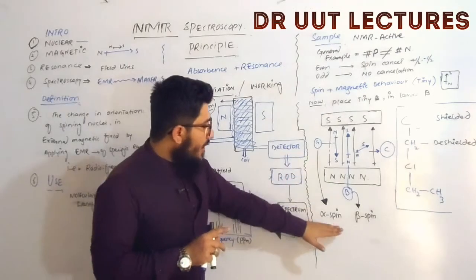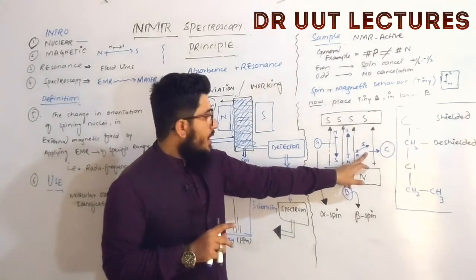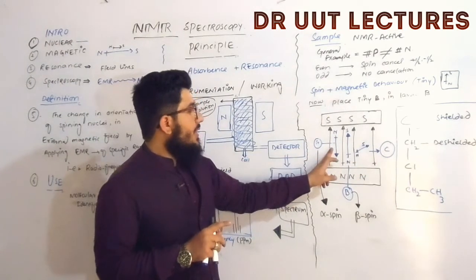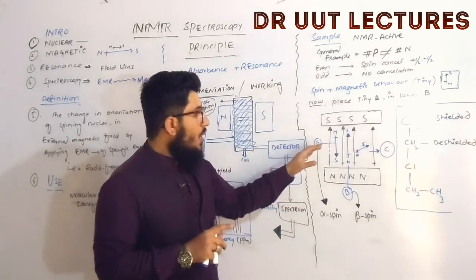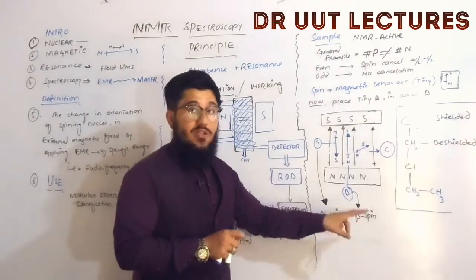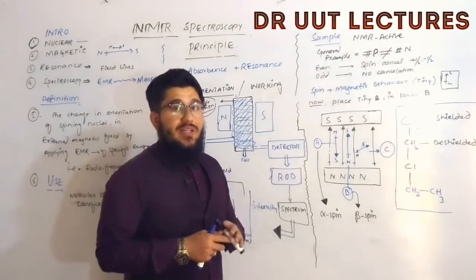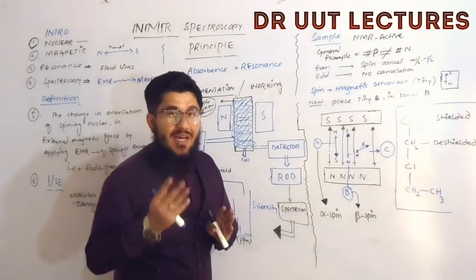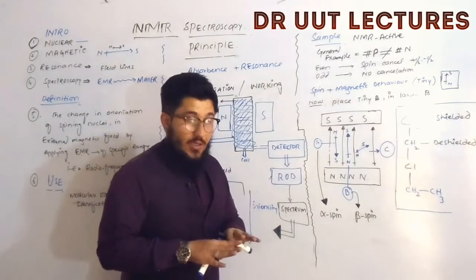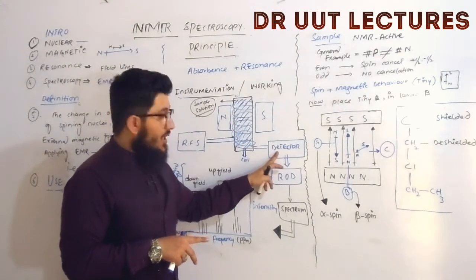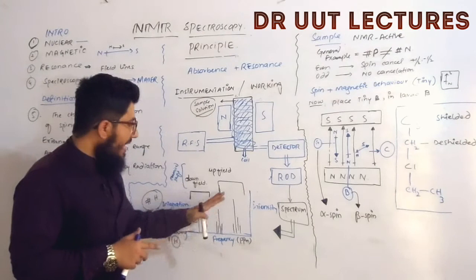Before radiation, some field lines had alpha spin and some had inclined spin. After radiation, all become beta (unstable). Since everything wants to return to a stable state, the nuclei emit radiation to become stable again. This emitted radiation is detected by the detector, forwarded to the read-out device, which gives us a spectrum with peaks.